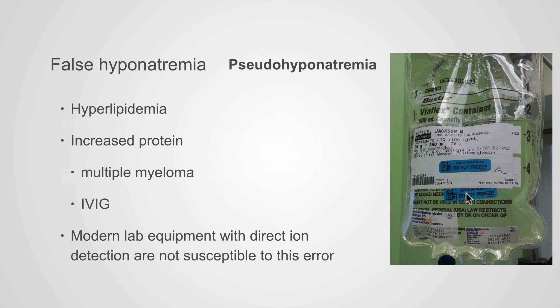We see pseudohyponatremia with increased lipids — hyperlipidemia — and increased proteins. Usually this is immunoglobulin, seen in multiple myeloma, Waldenstrom's macroglobulinemia, or with IVIG (intravenous immunoglobulin) therapy. Not every lab instrument is susceptible to this error — equipment with direct ion detection is not. You can call your pathologist to find out what method your hospital uses to measure sodium and whether it's susceptible to high lipids or proteins.